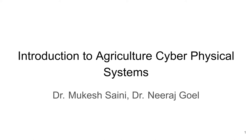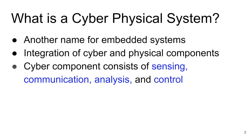The first point we have to understand is: what is a cyber-physical system? A cyber-physical system is a mix of a cyber-system and a physical system. A physical system is anything we see around - it could be a manufacturing plant, an agriculture field, an educational institute, or a classroom. The cyber-system is a computational system where we can write algorithms and analyze data. In a cyber-physical system, a physical system is connected to a cyber-system using sensing, and that sensing data is communicated and analyzed in the cyber-system. Then the cyber-system initiates some control which can change the state of the physical system.